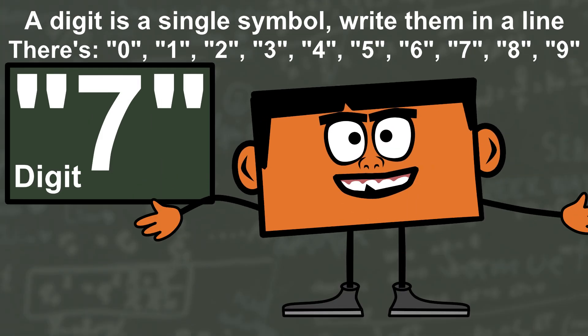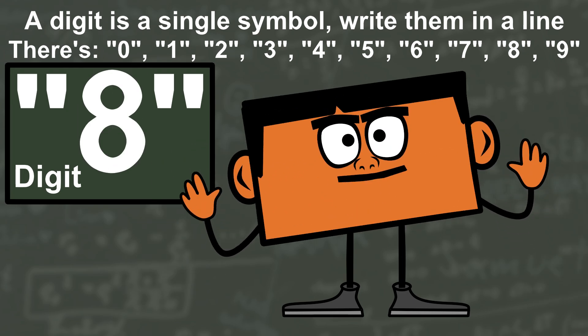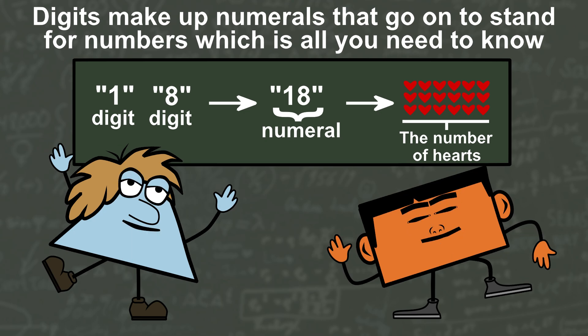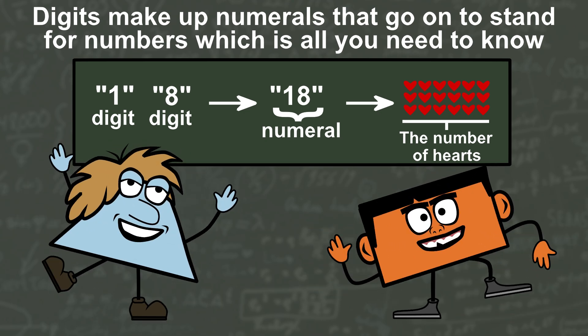A digit is a single symbol, write them in a line. There's 0, 1, 2, 3, 4, 5, 6, 7, 8, 9. Digits make up numerals that go on to stand for numbers which is all you need to know.